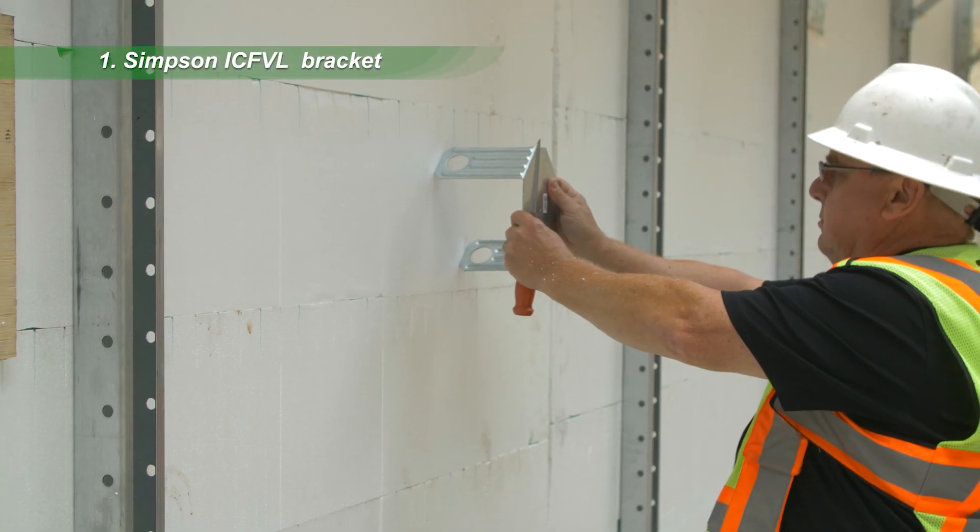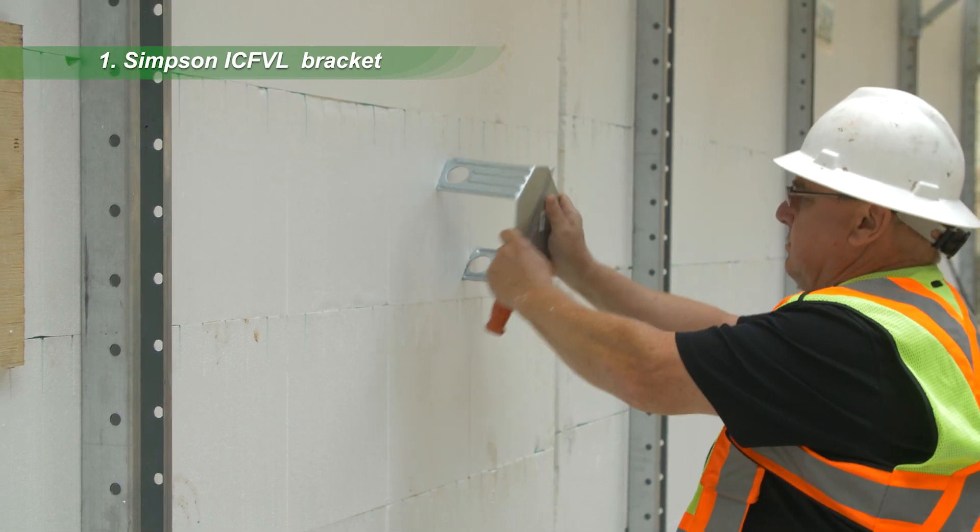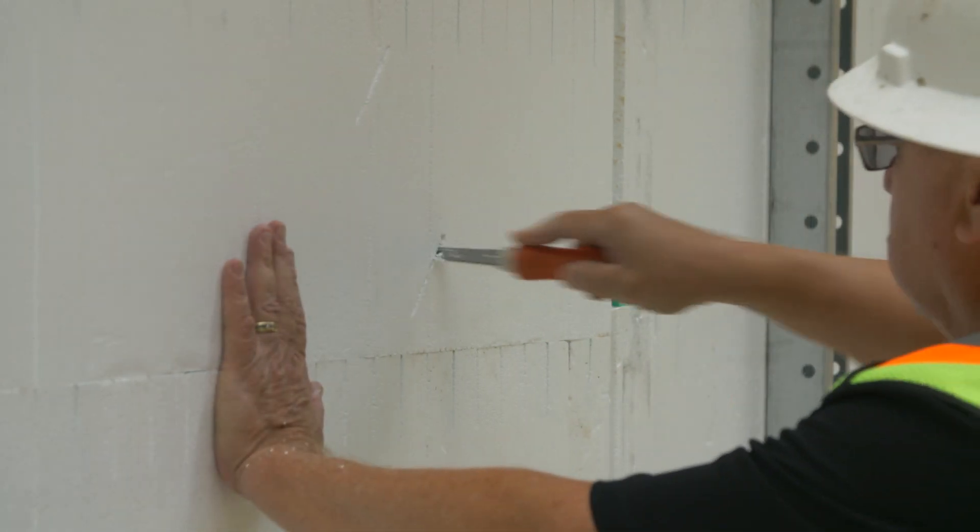First, use a Simpson Strong Tie ICF-VL bracket, which is embedded through the EPS and into the concrete cavity.